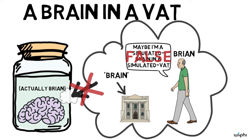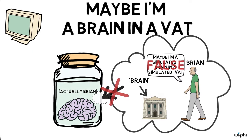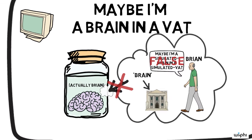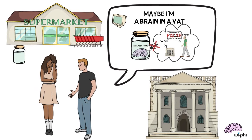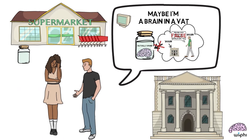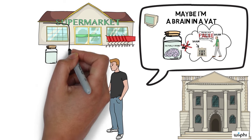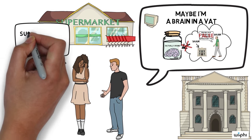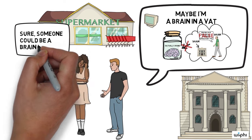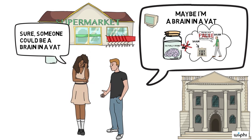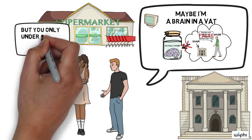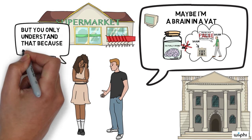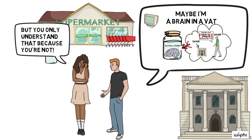Real brains and vats are one level up from the reality that Brian is experiencing. Meanwhile, in the common sense world, we can grasp the meaning of the sentence 'someone could be a brain in a vat' in the way the skeptic wants us to, if we've had the right kind of contact with physical brains and vats. But if we've had that kind of contact with brains and vats, then we aren't just stuck in a virtual reality — we're in the common sense world, and the skeptic shouldn't scare us.